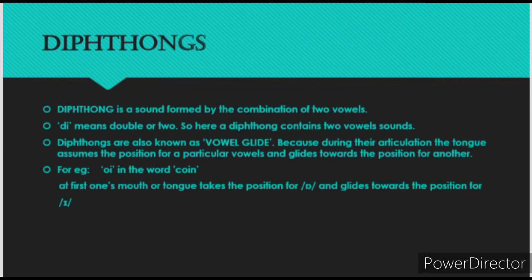A diphthong is a sound formed by the combination of two vowels. Mono means single, so a monophthong is a single vowel sound. Di means double or two, so a diphthong is a combination of two vowel sounds. During their articulation, the tongue assumes the position for a particular vowel and glides towards the position for another.